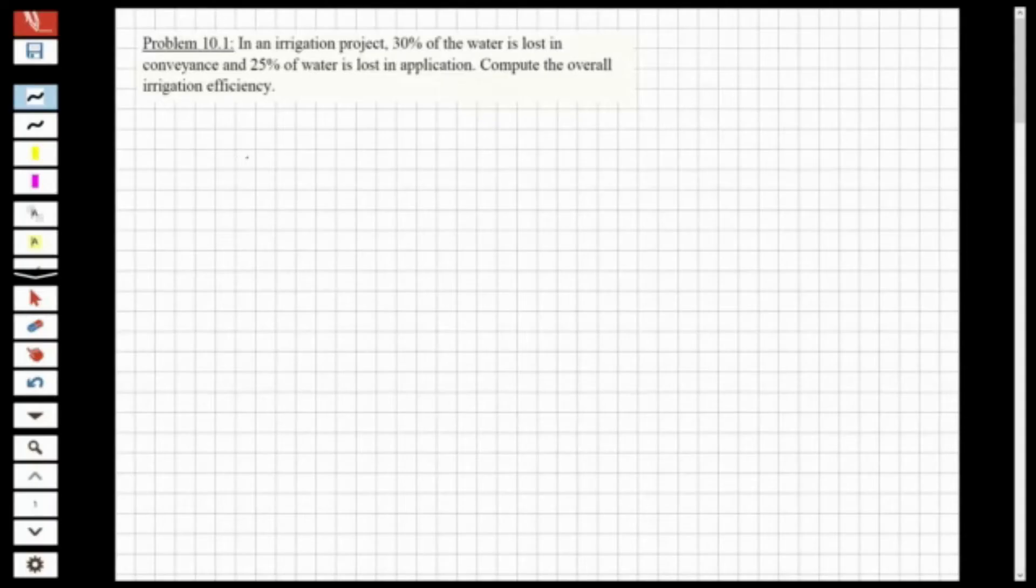Hi guys, welcome to my channel. In this video we are going to solve two questions about water resources engineering, and the chapter will be irrigation. Let's solve the question. The first question says that in an irrigation project, 30% of water is lost in conveyance and 25% of water is lost in application. Compute the overall irrigation efficiency.